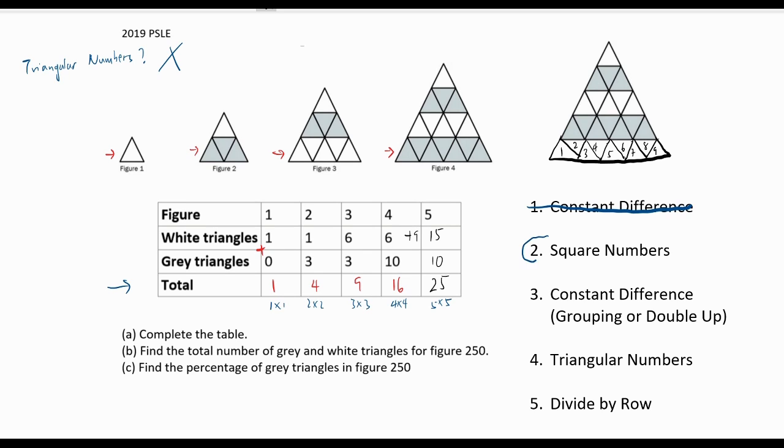but it is square numbers. So write down the product of the square roots, and find a link between the square roots and the figure numbers. It's pretty straightforward in this case. The figure numbers are exactly the same as the square roots. So to find the total triangles for figure 250, we just take 250 times 250, and that will be 62,500.